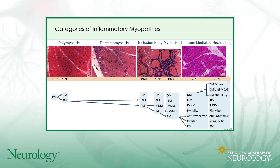Today we're going to be focused specifically on this entity called PM-Mito, which first appeared in the literature in 1997 as a specific type of polymyositis — polymyositis with mitochondrial pathology — and we'll be discussing its relationship to inclusion body myositis.